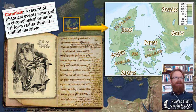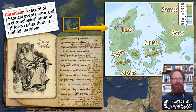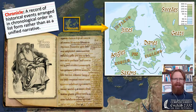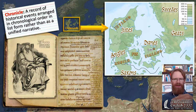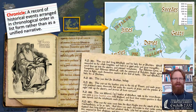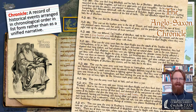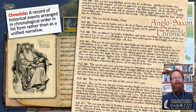Unlike most authors we've read, Saxo is writing a chronicle — not a unified literary narrative, but a record of historical events arranged in chronological order. A good example of an extreme chronicle is the Anglo-Saxon Chronicle, written over several centuries with different authors. It'll have entries like: in 860, King Ethelbald died; in 861, St. Swithin died; and in 866, the Great Heathen Army attacks England.